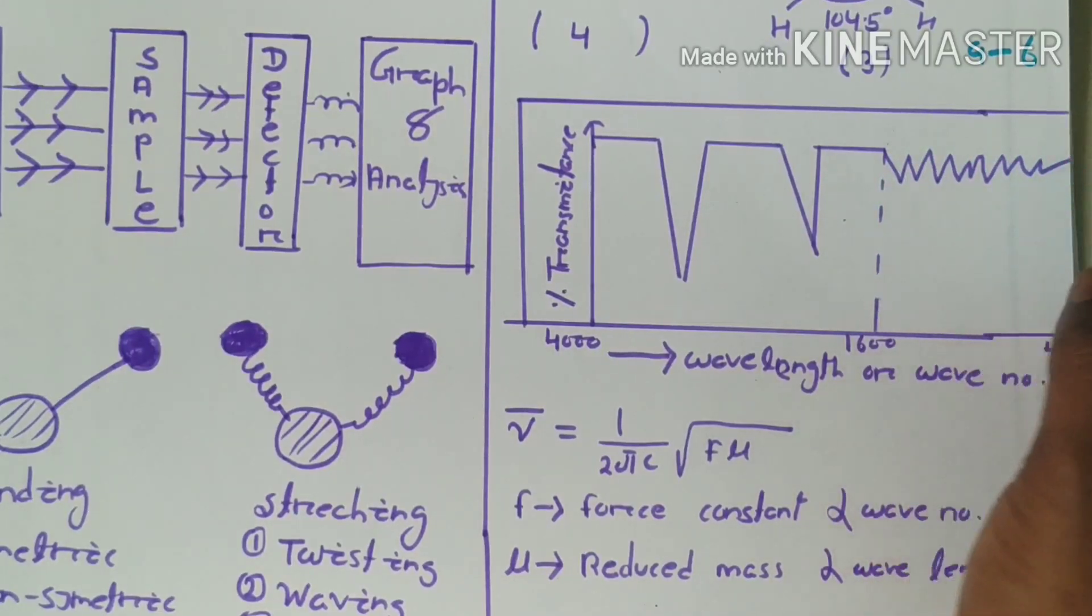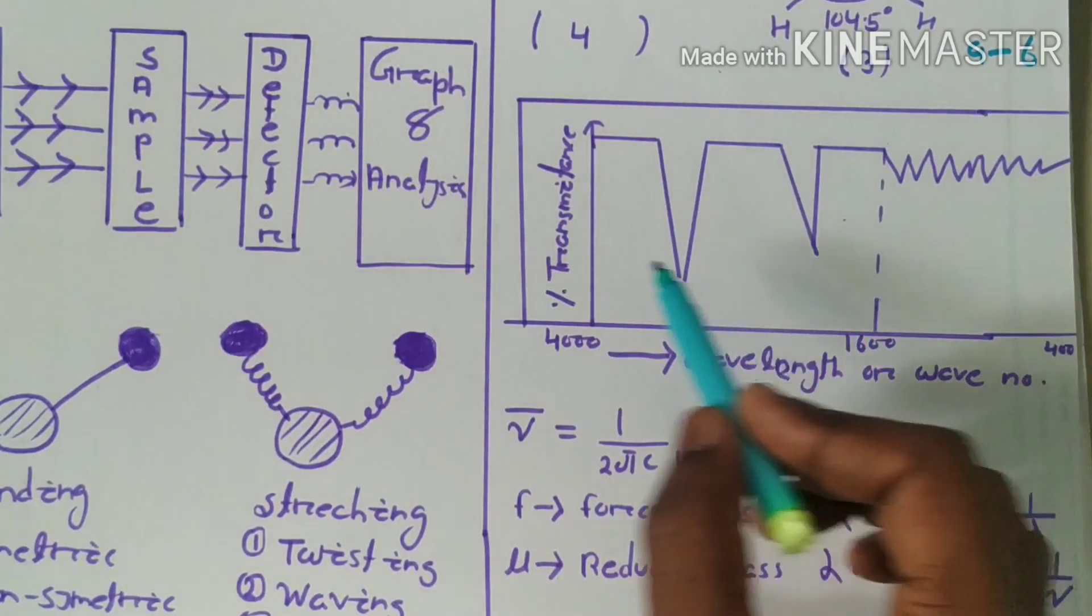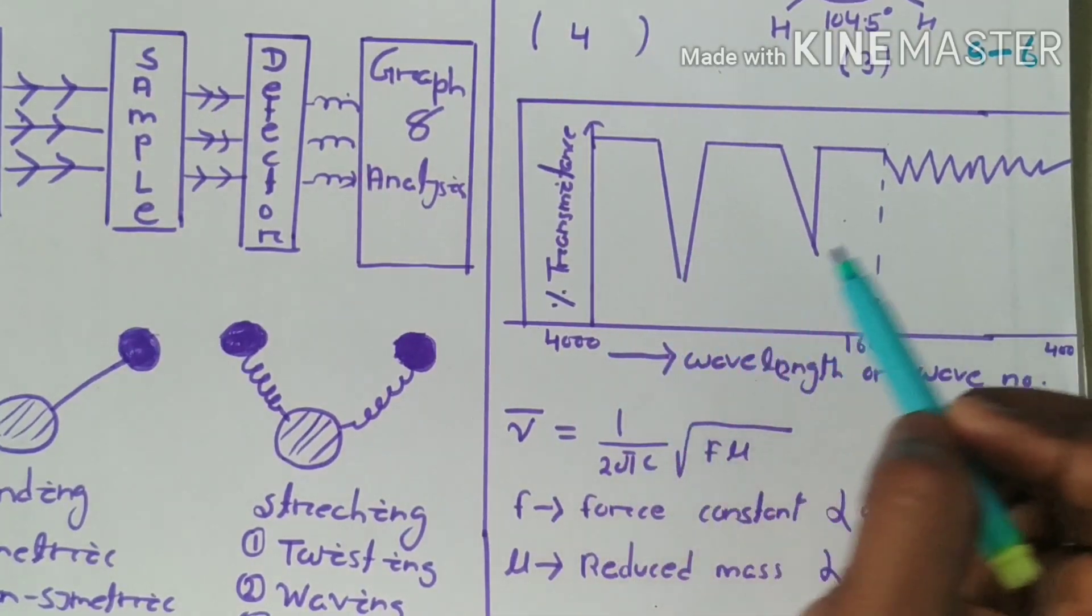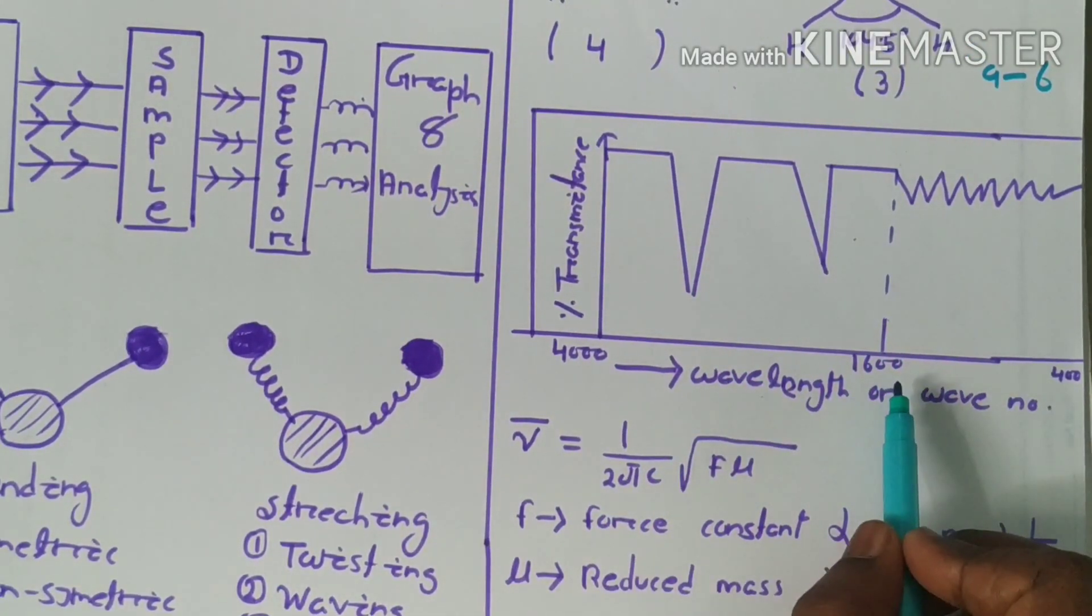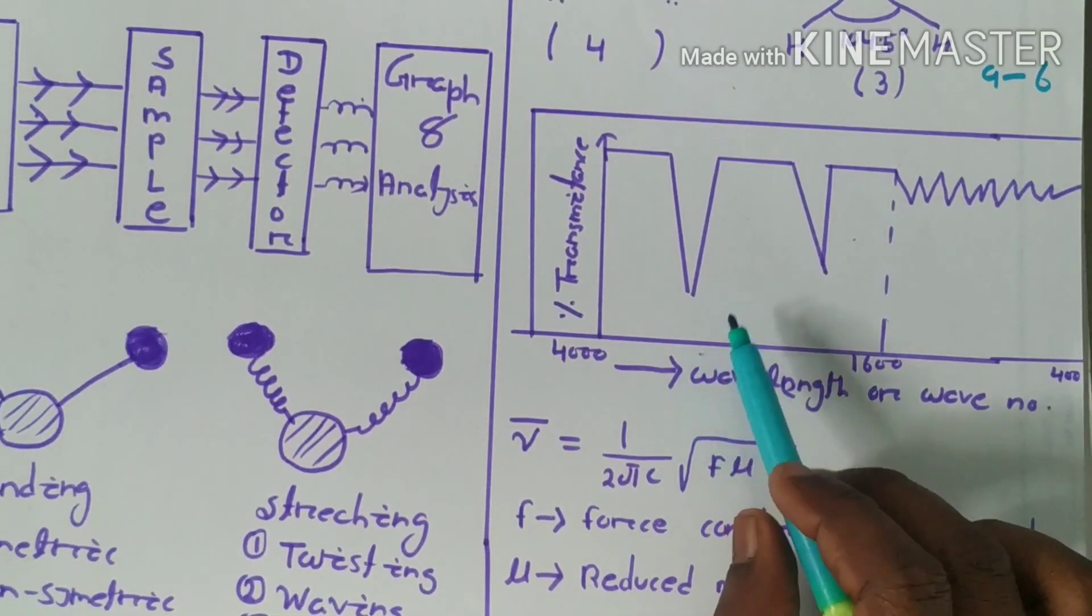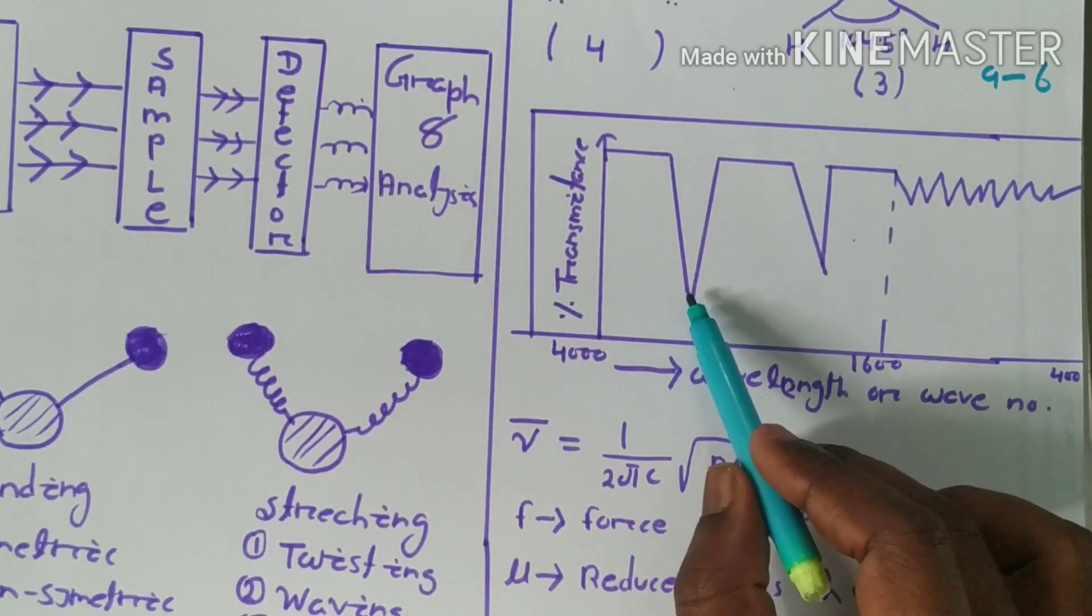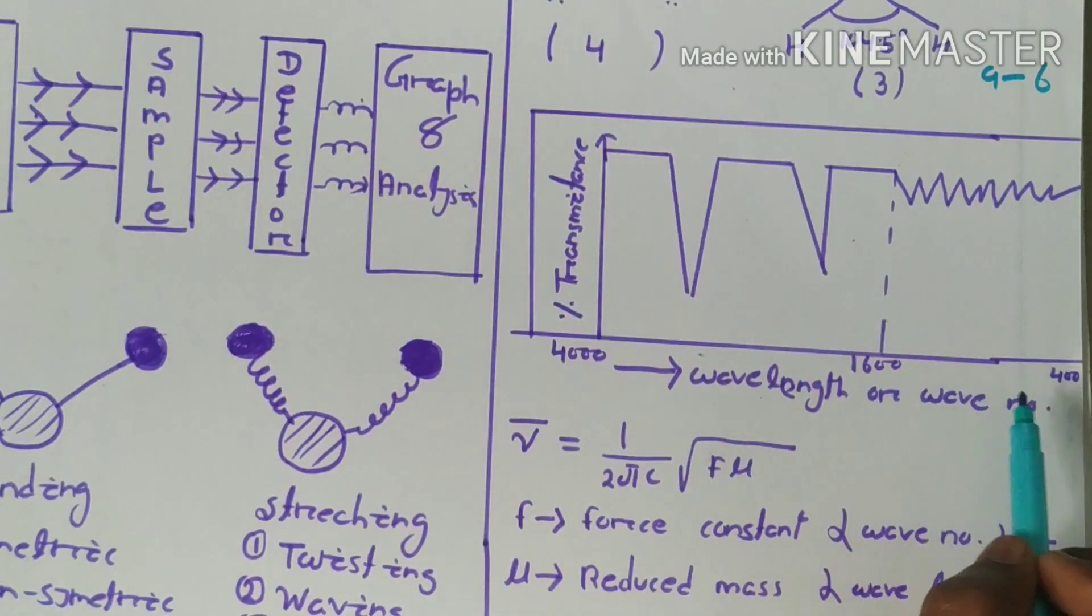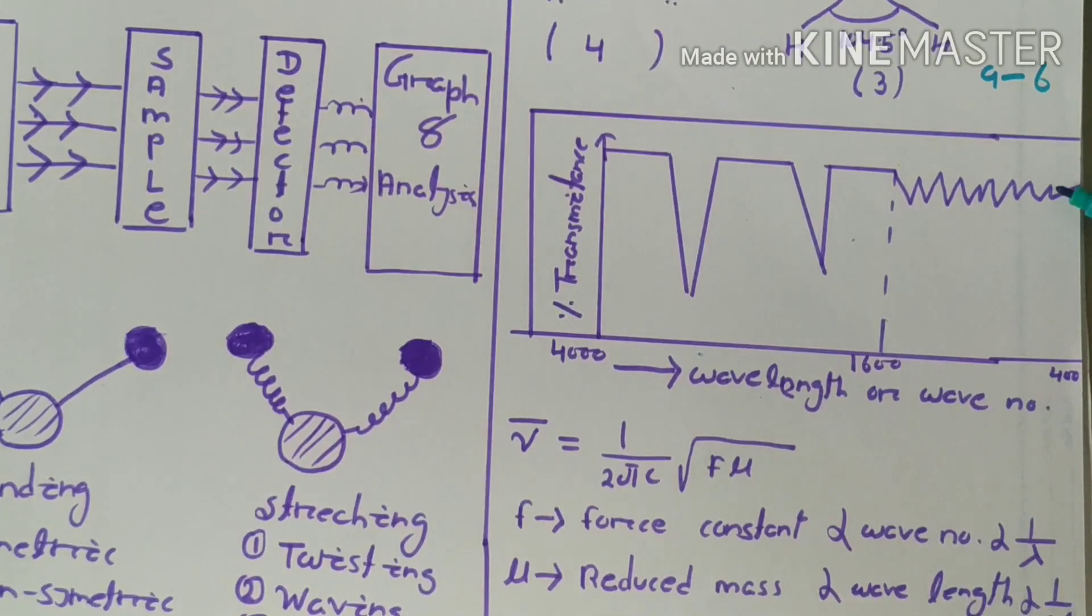The absorbance region falls between 4000 wave number to 1600 wave number. There are clear-cut waves and the absorbance is shown to be maximum. In the 1600 to 400 range, many molecules fall under this and there are many peaks, hence it is known as the fingerprint region.